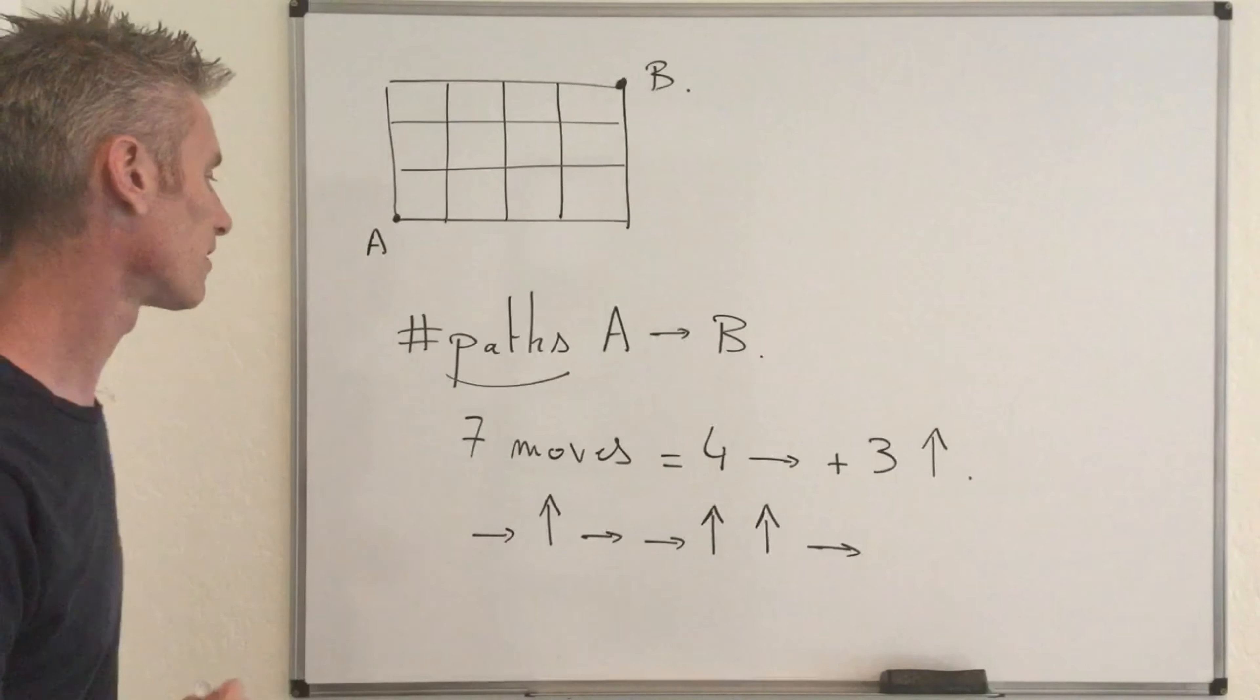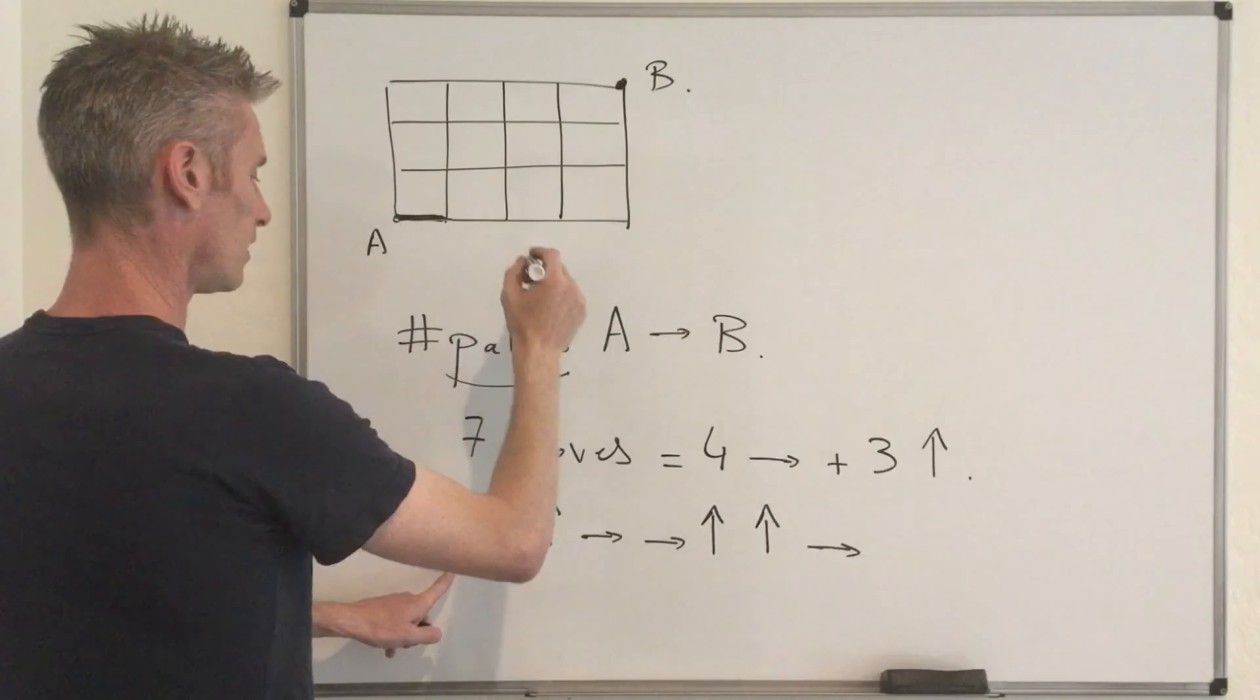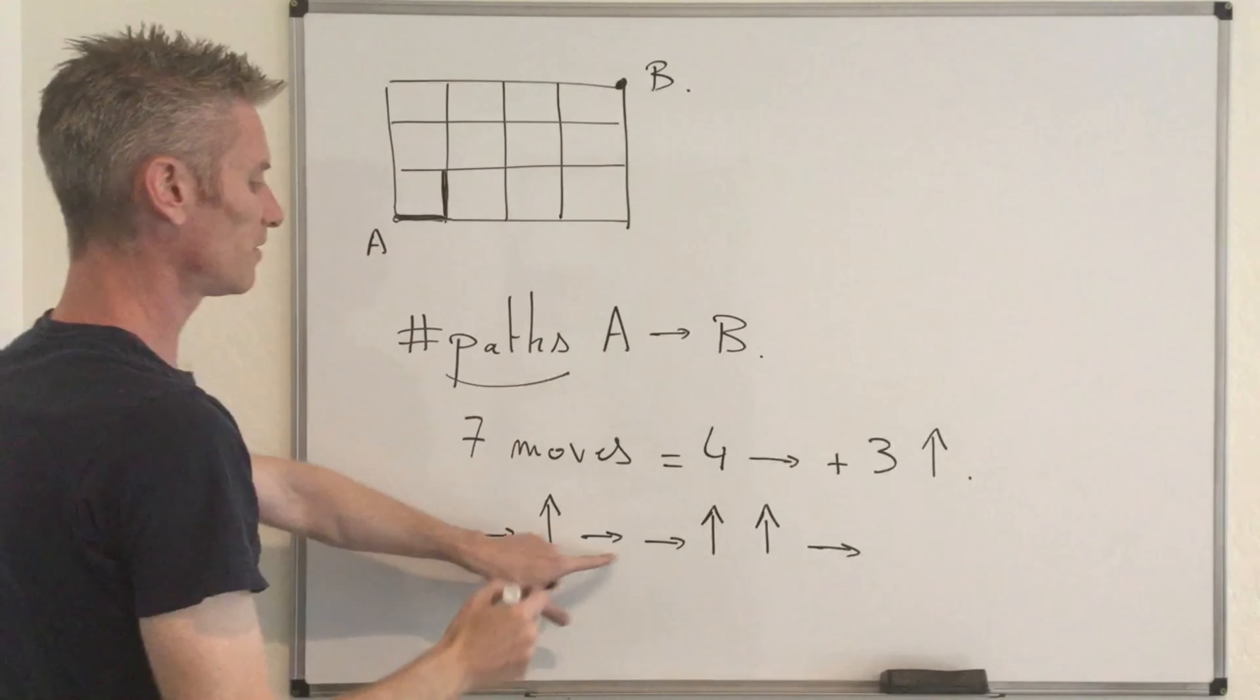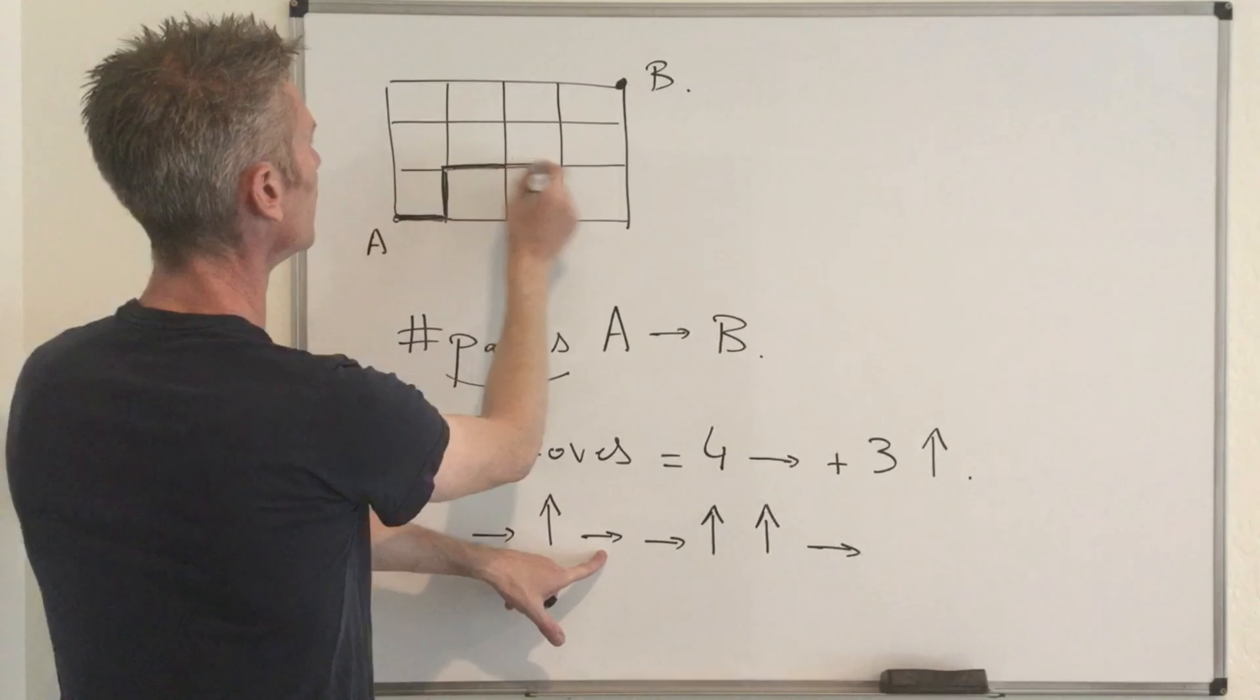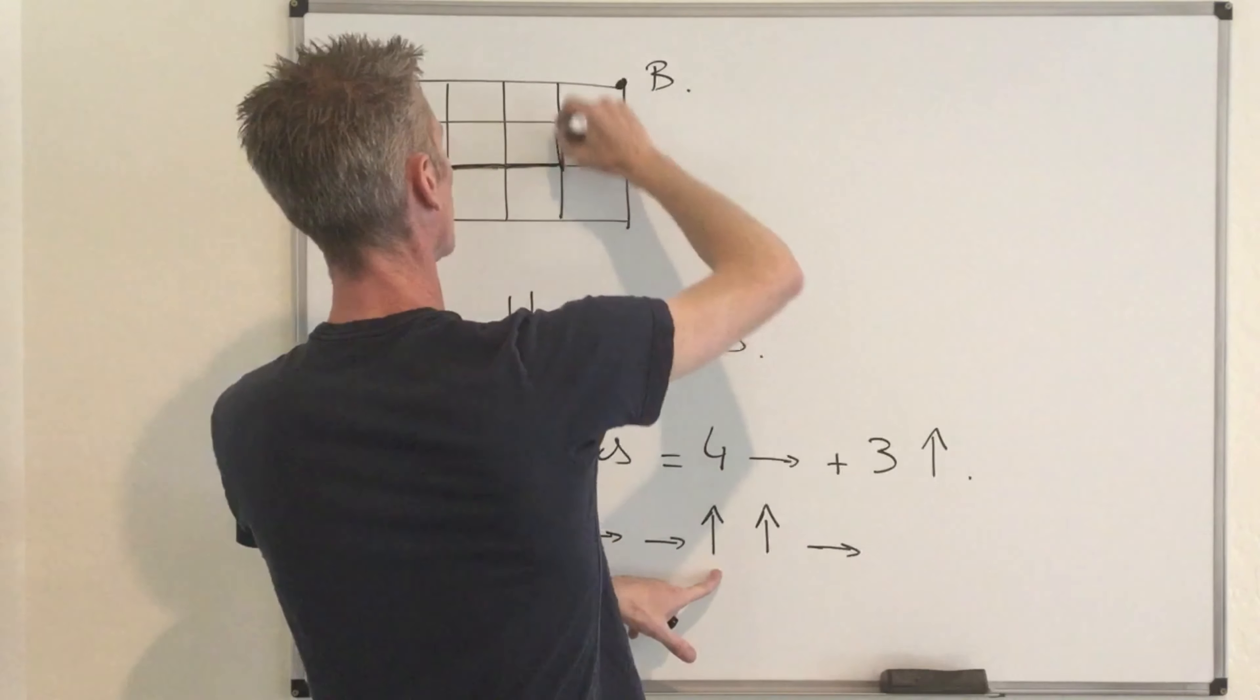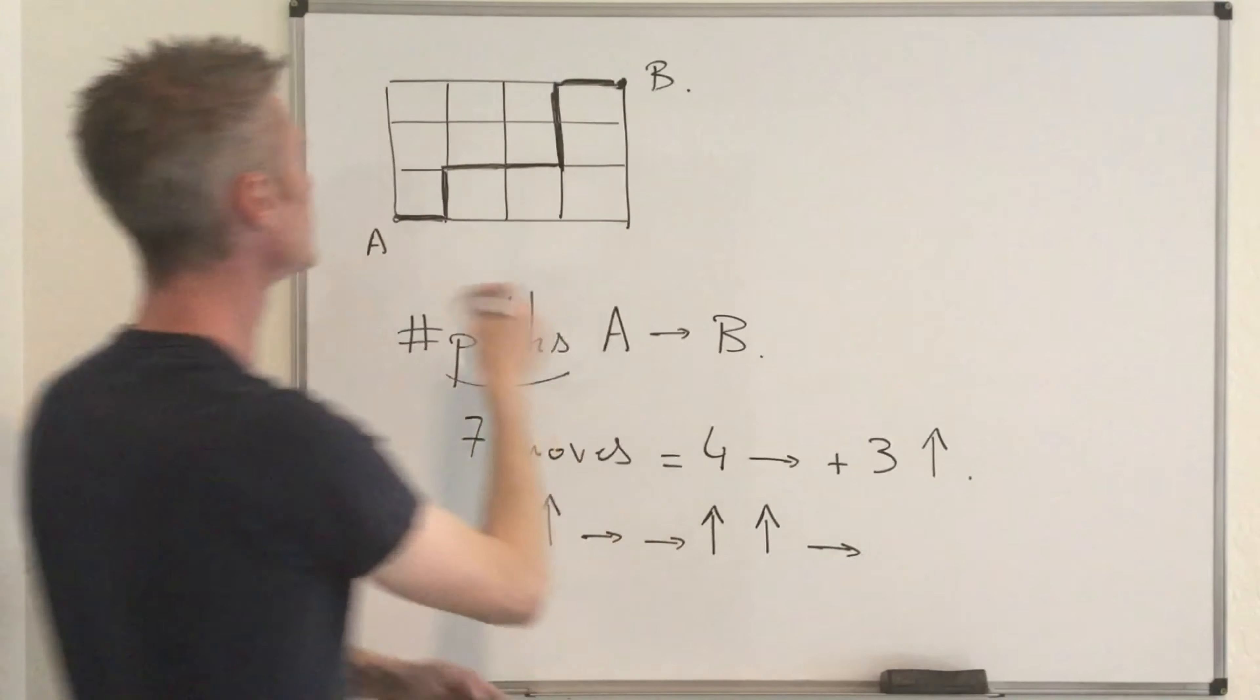Then your corresponding path is going to be first a right move. So you go in this direction, and then you go up once, this one, and then you follow here, right again, and right again, and then up, up, and right. So that gives you, for instance, one possible path here.